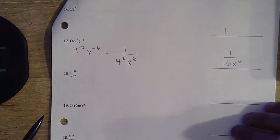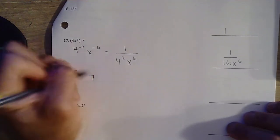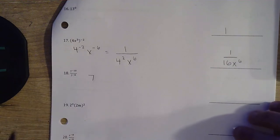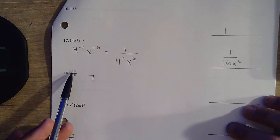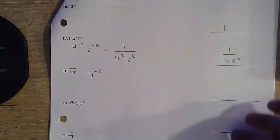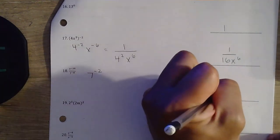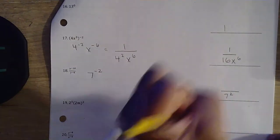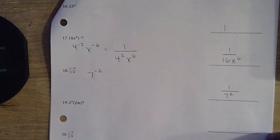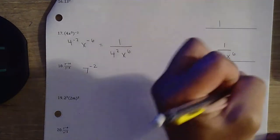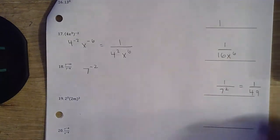Question number 18. Same base — we divide, so we subtract those exponents. Negative 10 minus a negative 8 gives us negative 2. We don't want negative exponents, so we go ahead and make a fraction. We bring that 7 squared down — make it a positive. So 1 over 7 squared — that's going to be 49. That is our final answer.